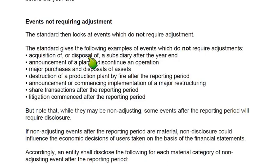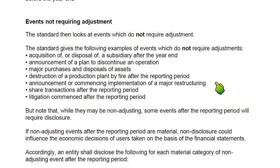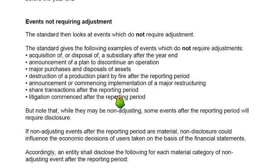Other examples of non-adjusting events: acquisition or disposal of a subsidiary after the year end; closing a product line without communicating it to stakeholders; discontinuing an operation; restructuring the business, such as replacing debt capital with equity capital by issuing new shares; or if there is litigation — someone suing the company for misconduct after the year end. These are all non-adjusting events.